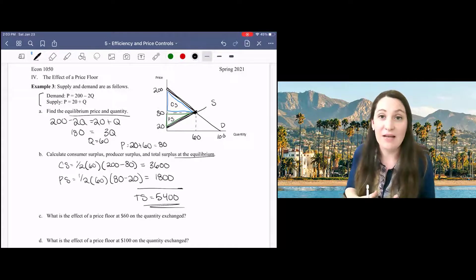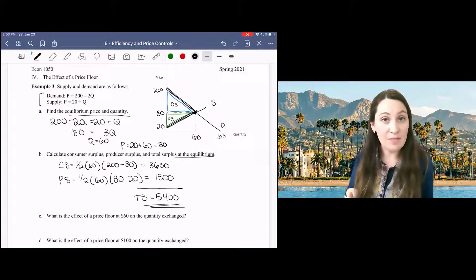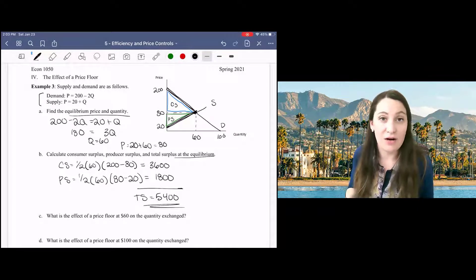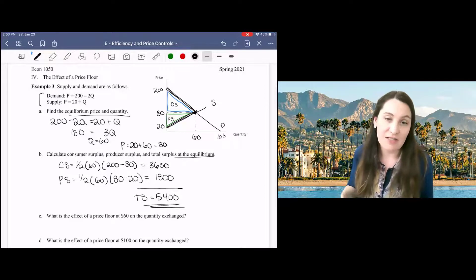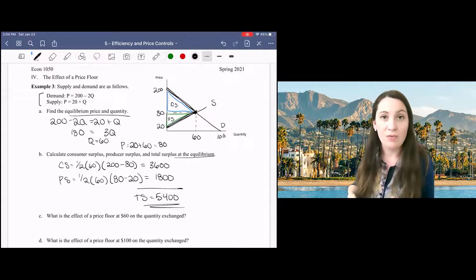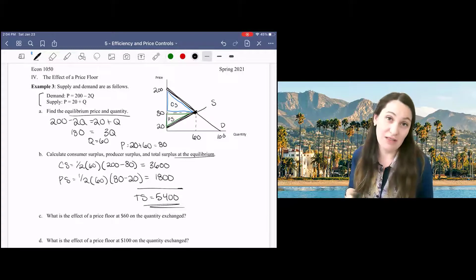Now that we've outlined what's happening at the market equilibrium, it's time to start to examine the impact of a price floor on the market. We'll begin in Part C with a price floor at 60, which actually will have no effect on the market.